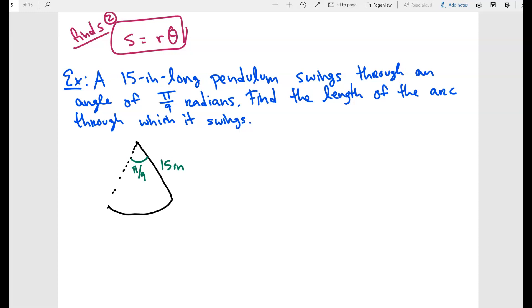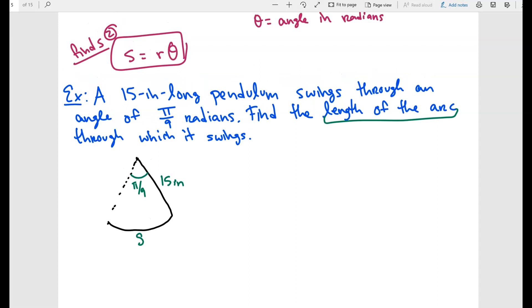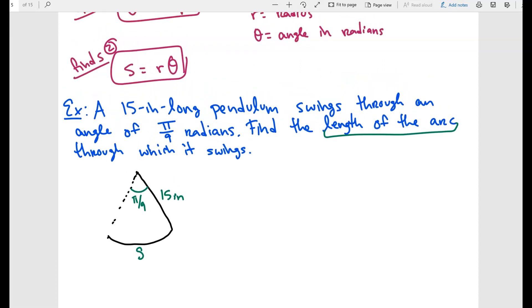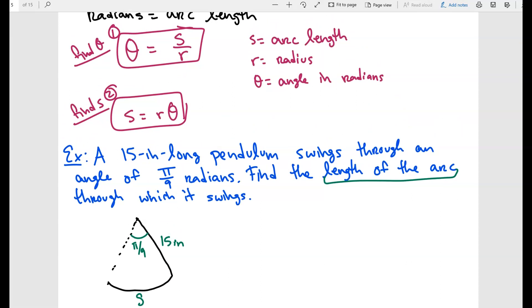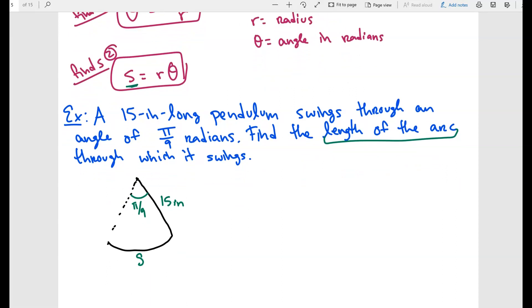So what we want to figure out is find the length of the arc through which it swings. So we want to figure out this guy, which is S. Since we want to find the arc length, which formula would be the best one to use? Number one or number two? Well, number two, because we are looking for the arc length. So we have to use S is equal to R theta.